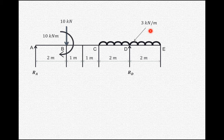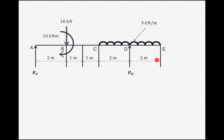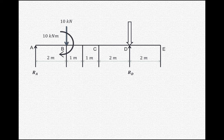Similarly we have to convert the uniformly distributed load. The UDL is 3 kN/m acting over a total length of 4 meters, so the equivalent point load is 3 into 4, acting at the center of the 4 meter length, that is 2 meters from the start, which is point D. So we have converted this UDL into a point load acting at the center.